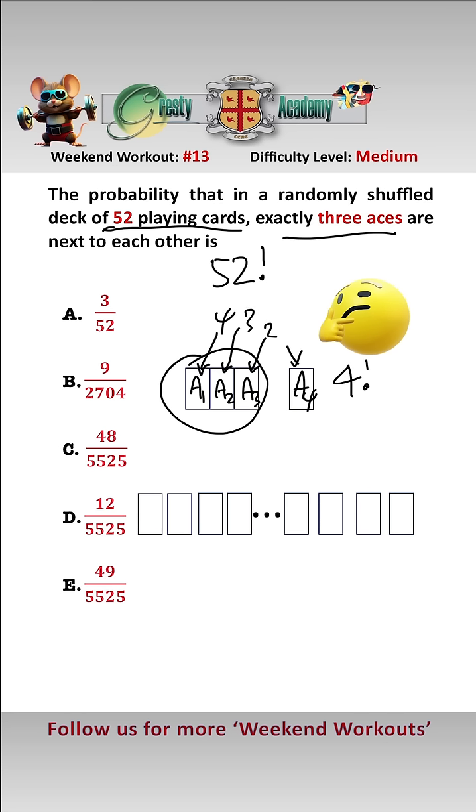So there are four factorial ways of arranging the aces. Let's have a look at the other 48 cards, there's 48 factorial ways of arranging them and there are 49 gaps between them and we can put the three aces in any one of the 49 gaps.